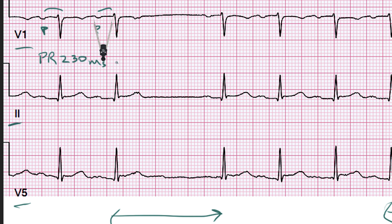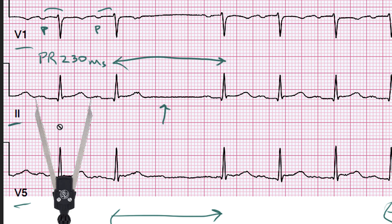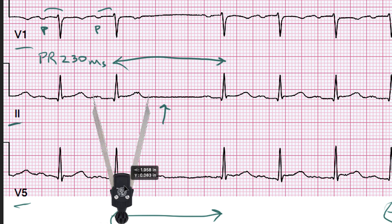But then what happens is we've got this pause. Most people will look for second degree AV block. If we set these calipers for the P-to-P interval and move them over, we would have expected a P wave to land right here if second degree AV block were present. But there's no P wave here, so you can't really call second degree AV block.